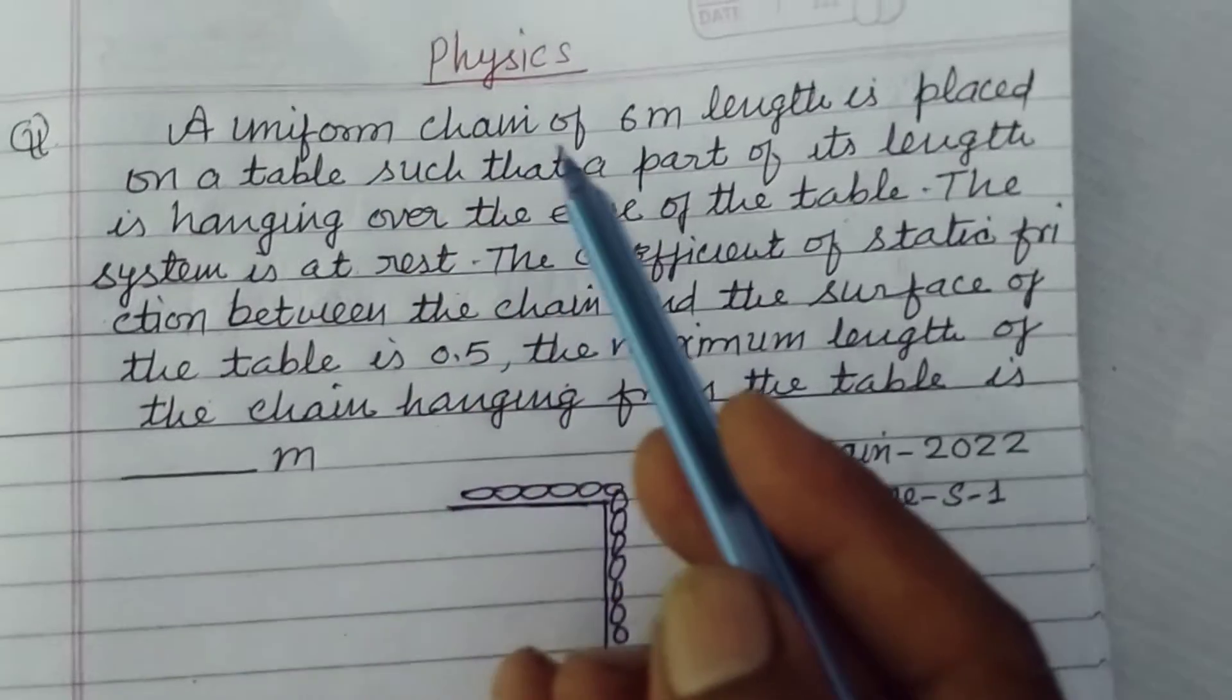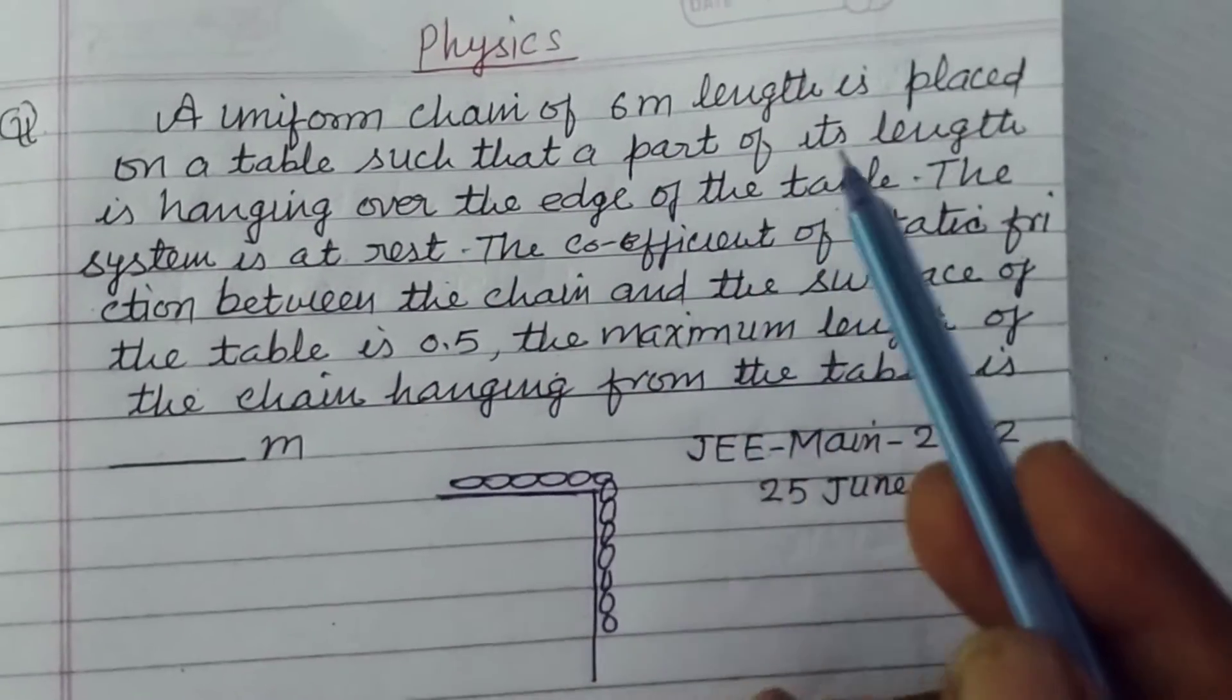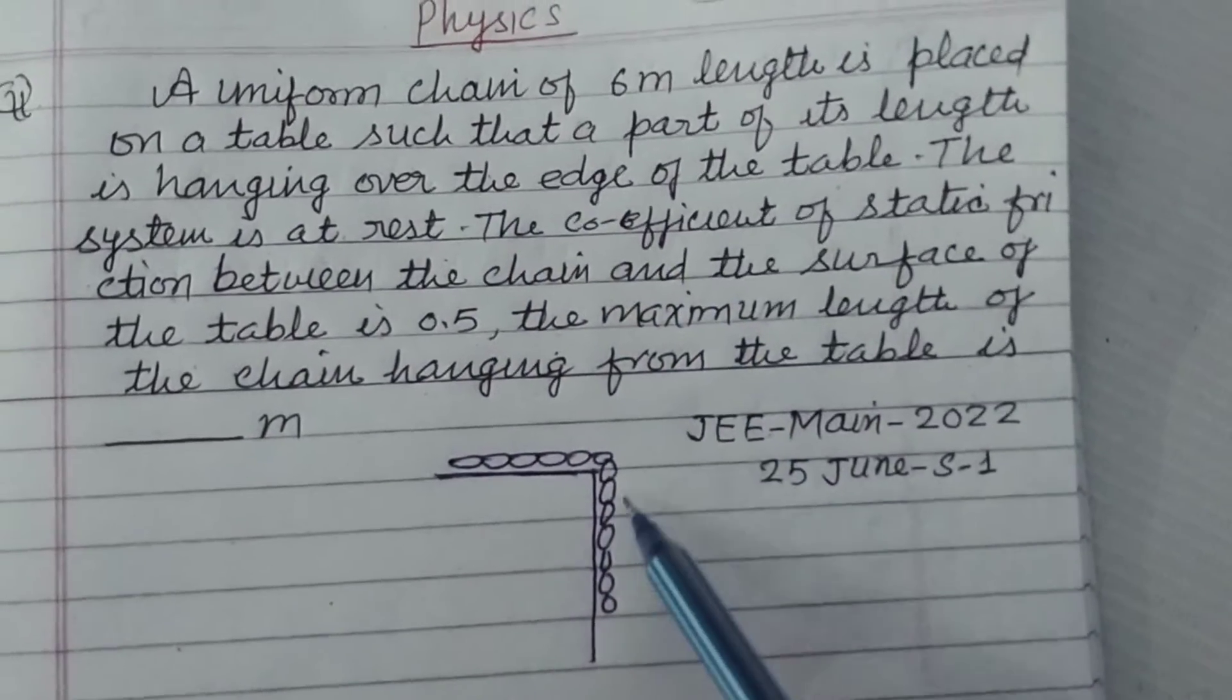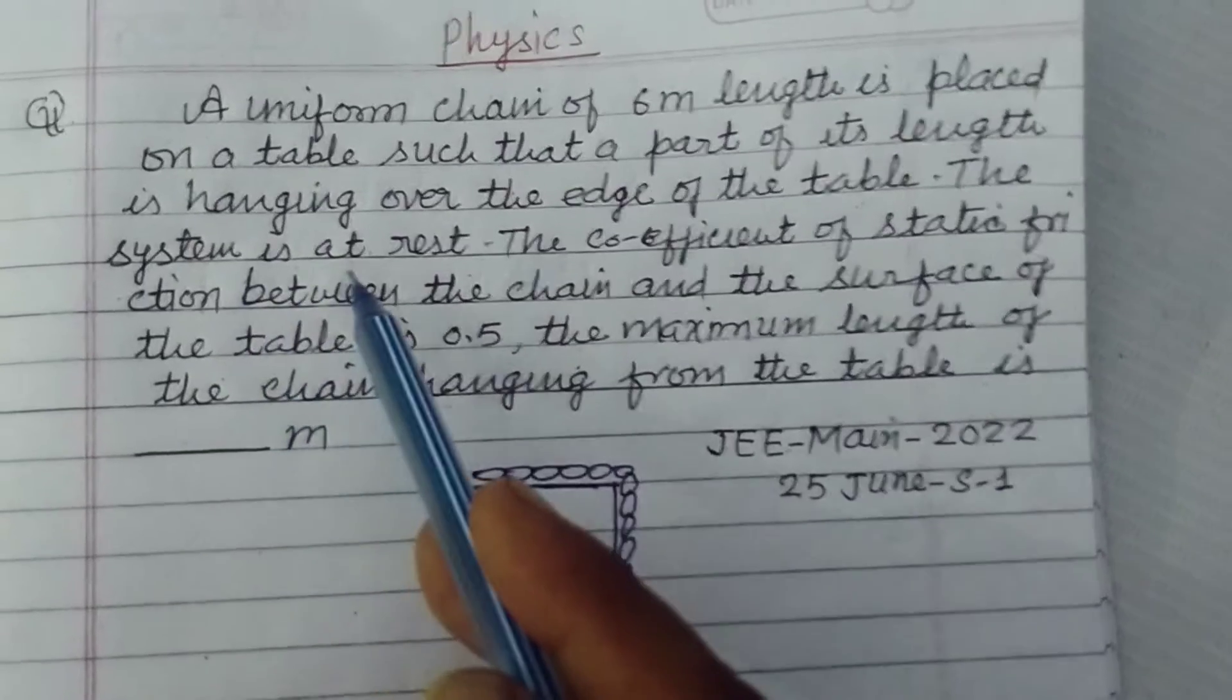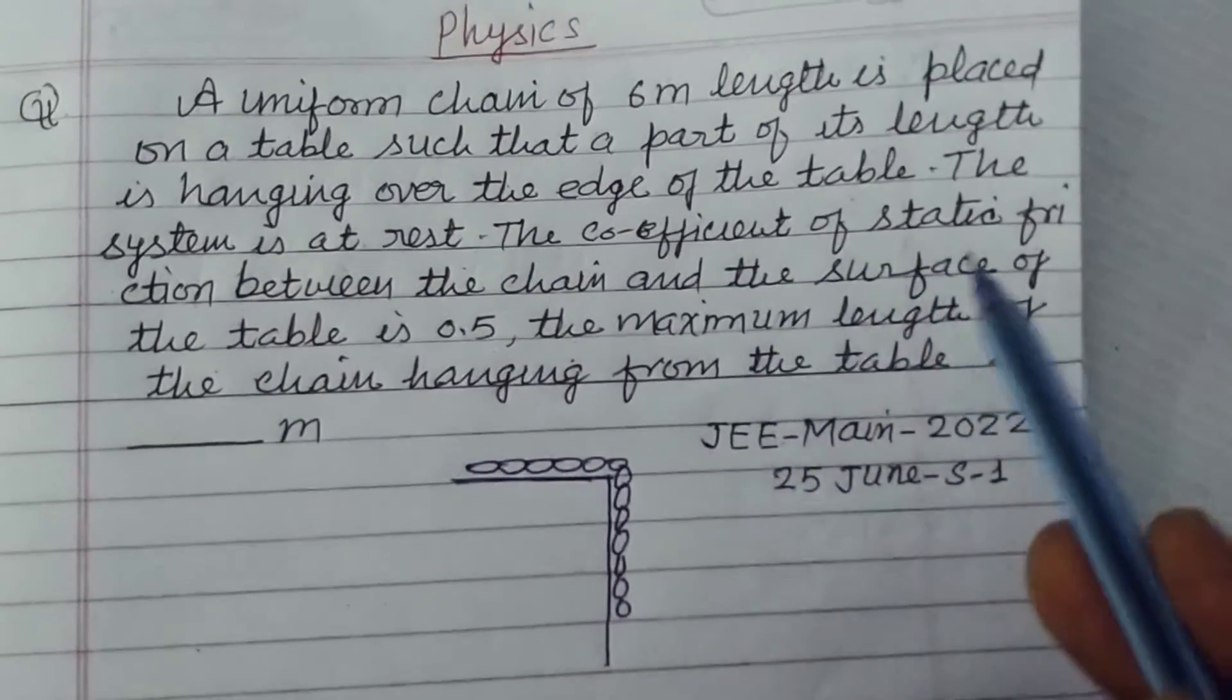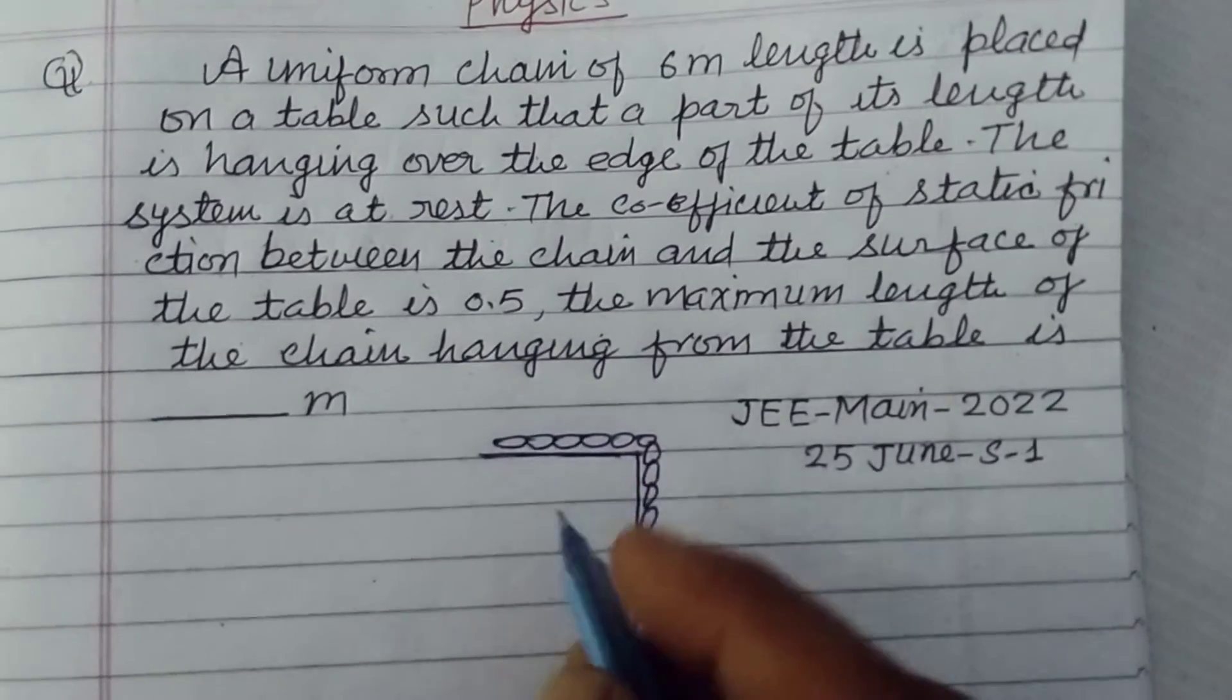A uniform chain of 6 meter length is placed on a table such that a part of its length is hanging over the edge of the table. This part is hanging. The system is at rest.